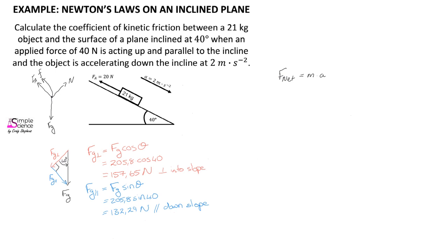Whenever we have an object on an inclined plane, the gravitational force has two components: the perpendicular component — the part of the gravitational force acting perpendicularly to the slope, calculated using cos of the angle — and the parallel component, the part of the gravitational force pulling the object down the slope. The normal force is always equal but opposite in direction to the perpendicular component of gravity.